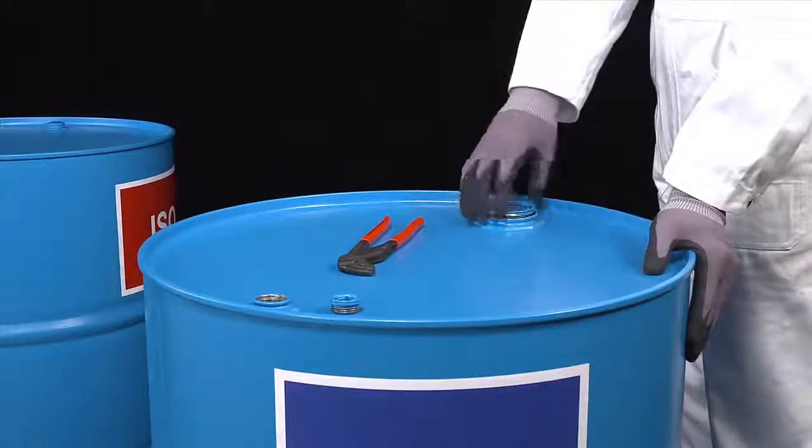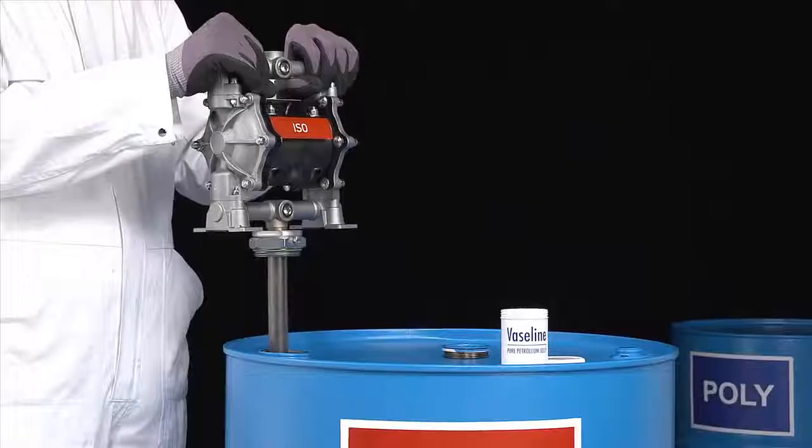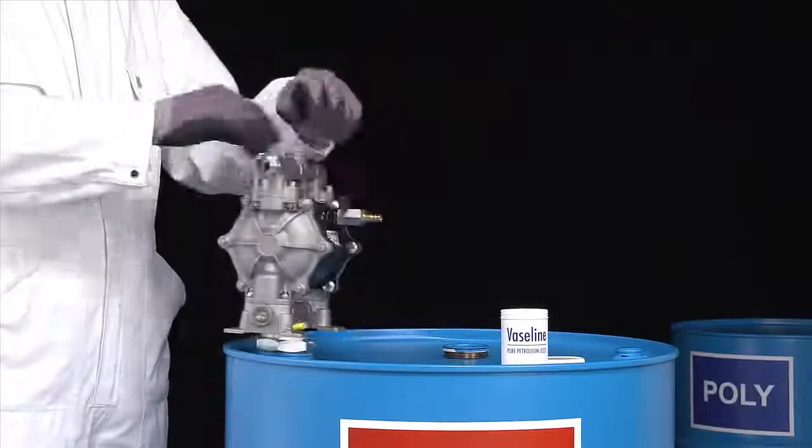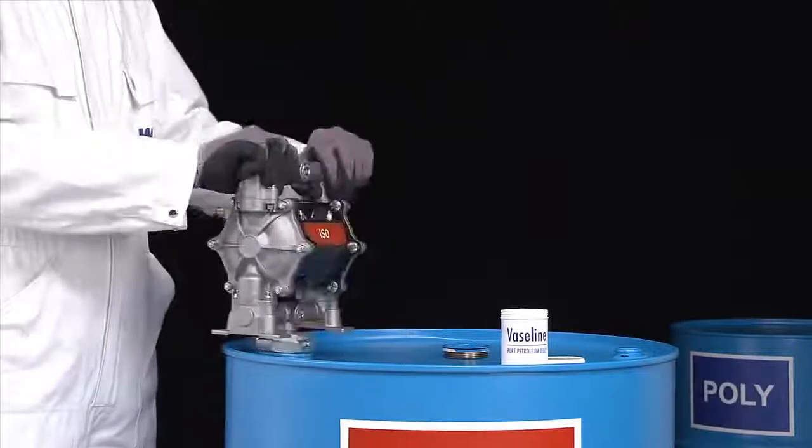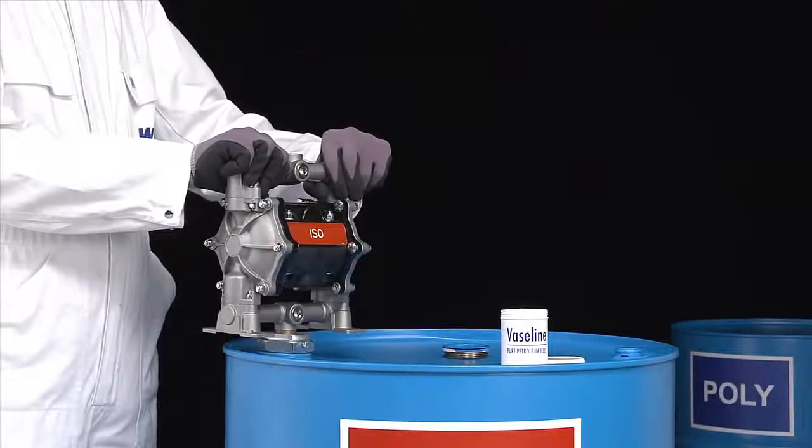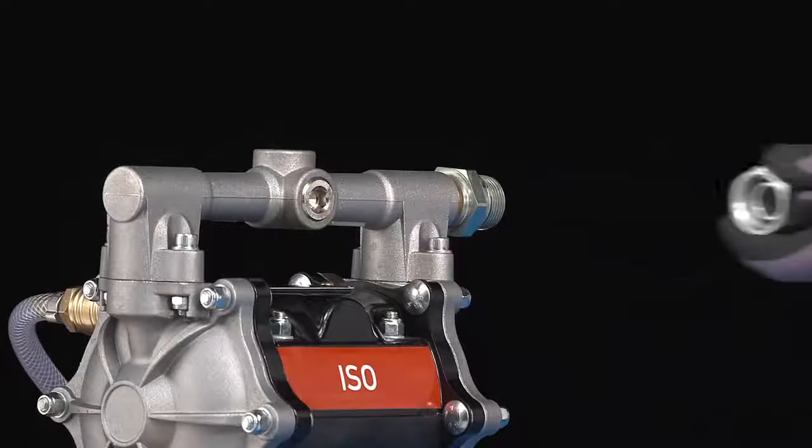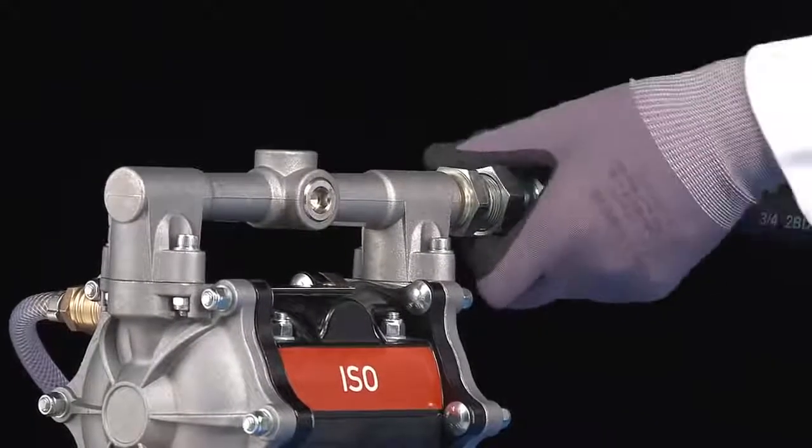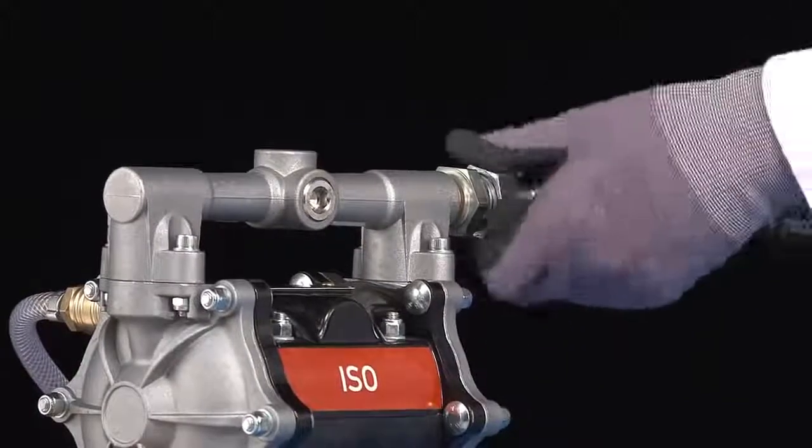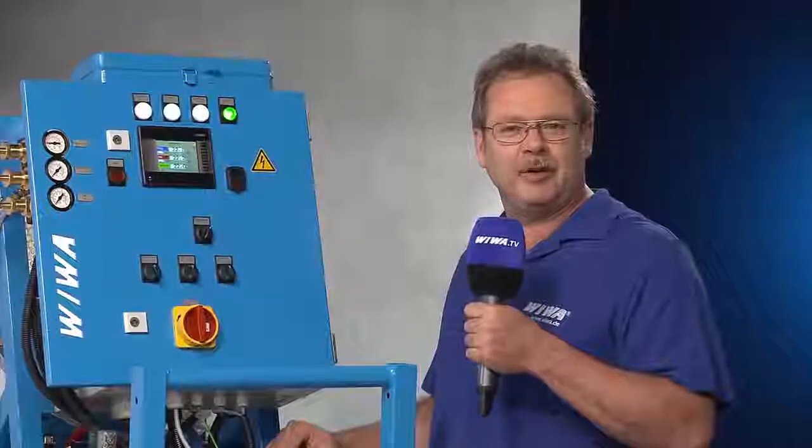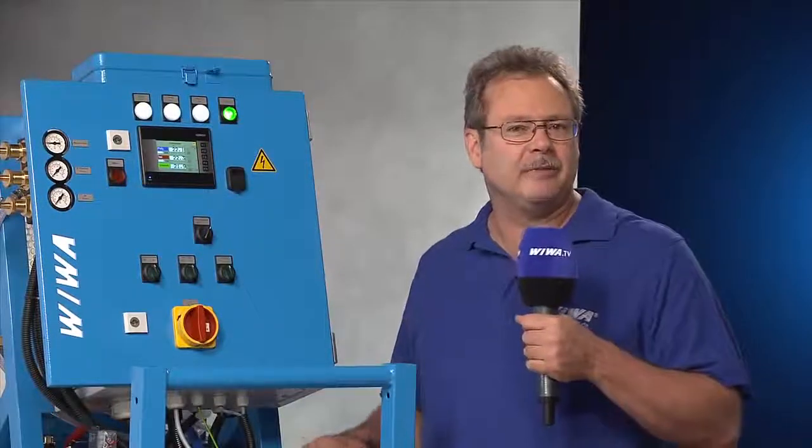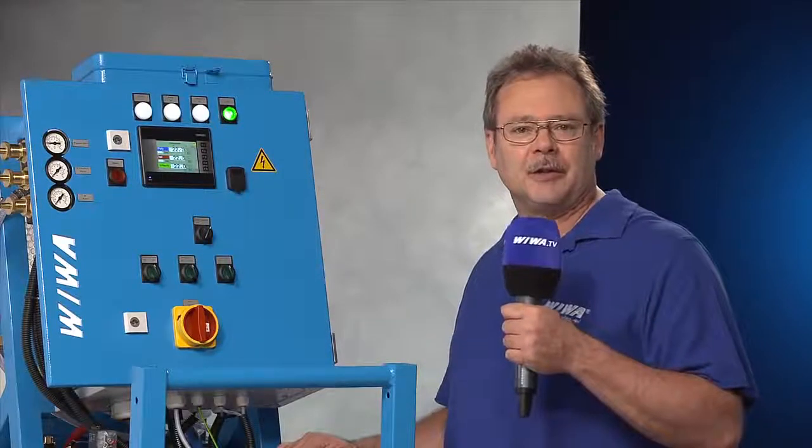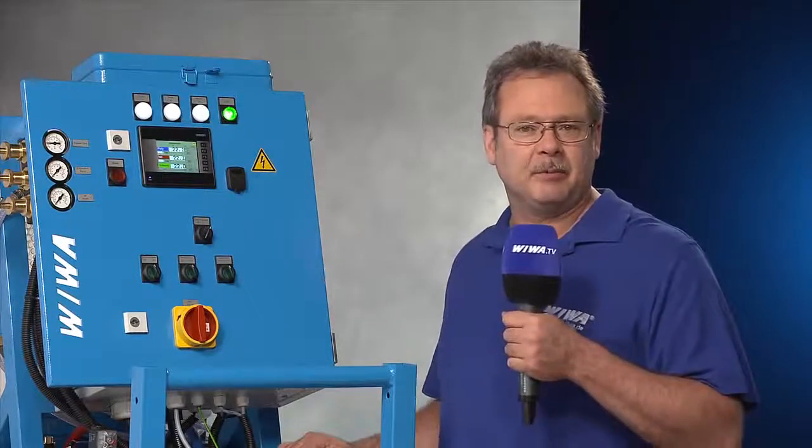Open the bunghole and the air inlet on the material drums and insert the feed pumps into the material drums. Ensure correct component allocation at all times. Red for the isocomponent and blue for the poly component. Ensure that the feed pumps are mounted upright without tilt and are securely positioned. We recommend lubricating the threads with vaseline. If the system is fitted with optional circulation fittings, run the return hoses into the material drums first and secure them to avoid accidental slippage when bleeding the system.